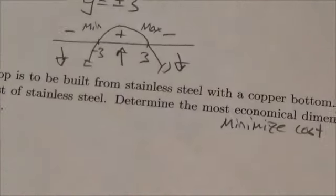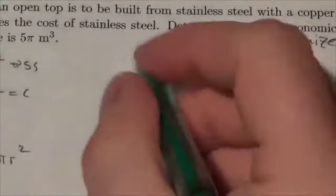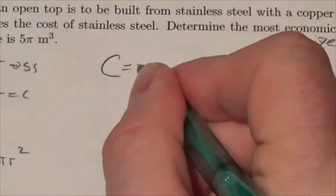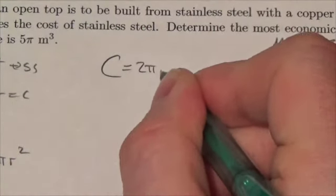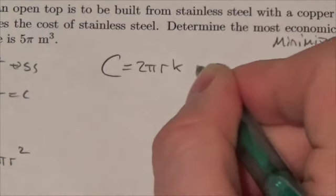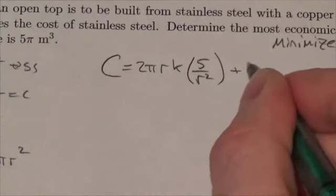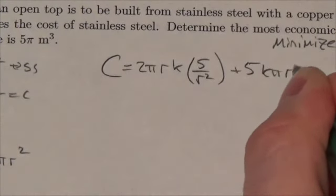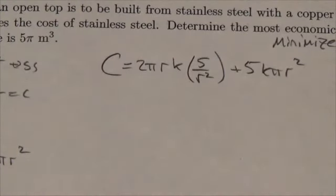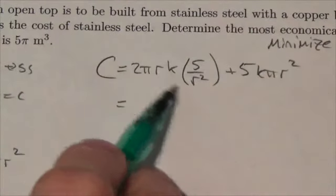So now I can come over here and I'm going to set up my cost expression, and this will be 2πrk, and then h will be 5 over r². And then I'll get 5kπr² for the bottom.